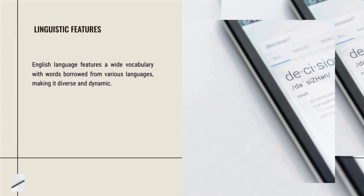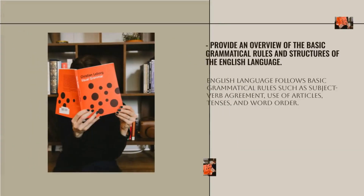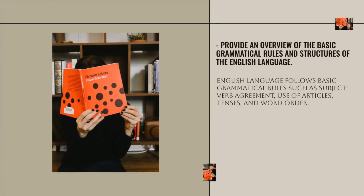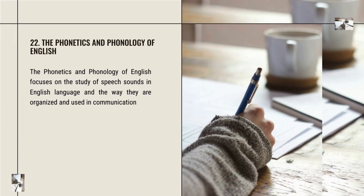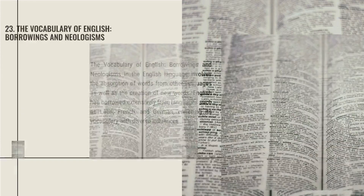English features a wide vocabulary with words borrowed from various languages, making it diverse and dynamic. English grammar encompasses basic rules and structures including sentence construction, verb tenses, punctuation, and parts of speech, such as subject-verb agreement, use of articles, and word order. The phonetics and phonology of English focuses on speech sounds, their organization and use in communication, encompassing vowel and consonant sounds, intonation patterns, and stress placement.